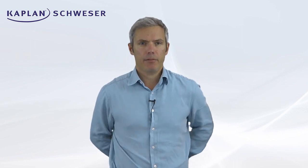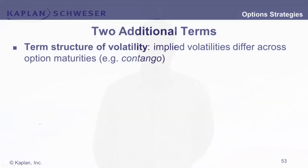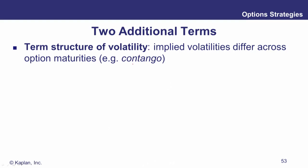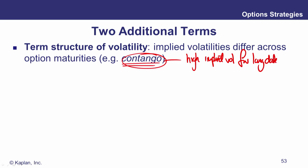Two additional terms to cover before we move away from implied volatility. The first is the term structure of volatility. Having different implied volatilities for different expirations is not an outrage, because we'd expect different events over different timeframes leading to different volatility levels. We borrow from the futures market the name Contango if we have higher implied volatility for longer-dated options — just as we use the term Contango when futures prices go up as we look further along the term structure, which just means looking at different maturities.